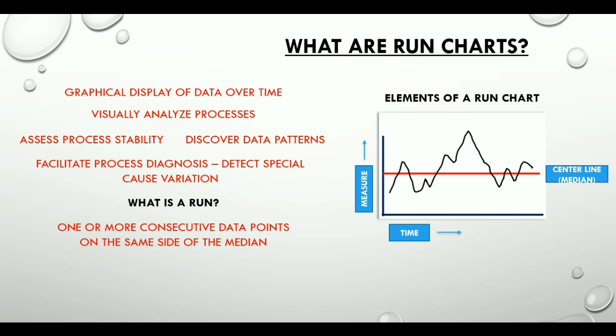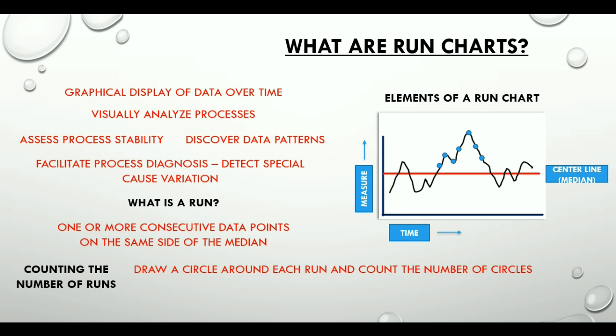On the adjacent chart, let's look at a possible run. Here we go: one, two, three, four, five, six, and seven. This is one run because these data points are consecutive and are on the same side of the median.